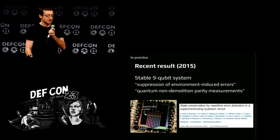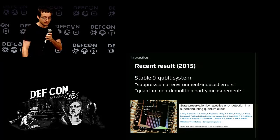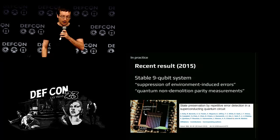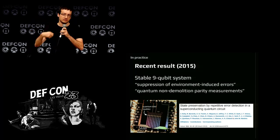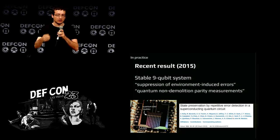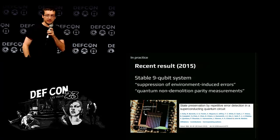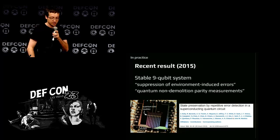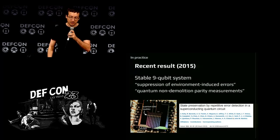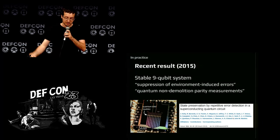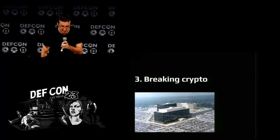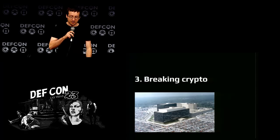A recent breakthrough achieved nine qubits this year — better than four — but it's not even an actual quantum computer. It's just a set of nine qubits that could live together for a few seconds while correcting errors induced by the environment.